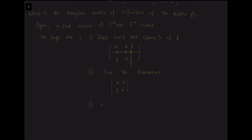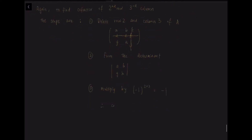Finally, we check the sign. We multiply by negative one to the power of the row plus column index. Because it is the second row and third column, that is negative one to the power of two plus three, which equals negative one to the power of five, equals negative one. So the component at the second row and third column has a negative sign.